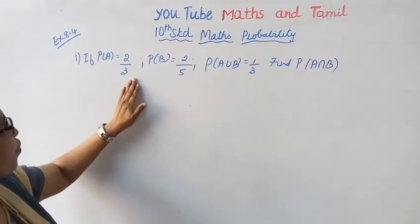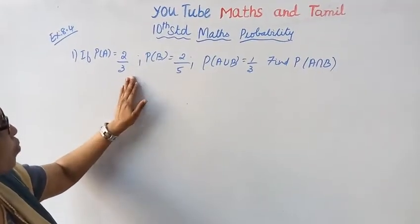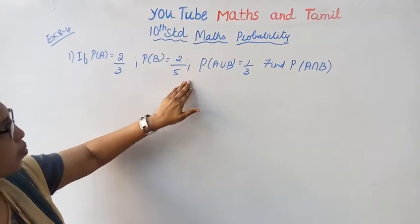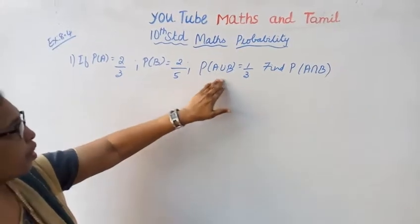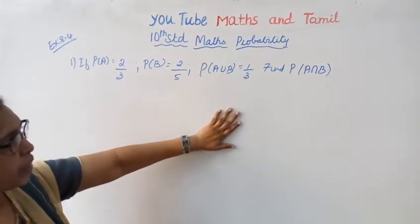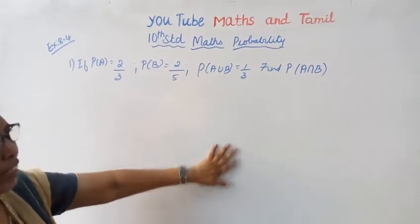If P of A equal to 2 by 3, P of B equal to 2 by 5, P of A union B equal to 1 by 3, find P of A intersection B.